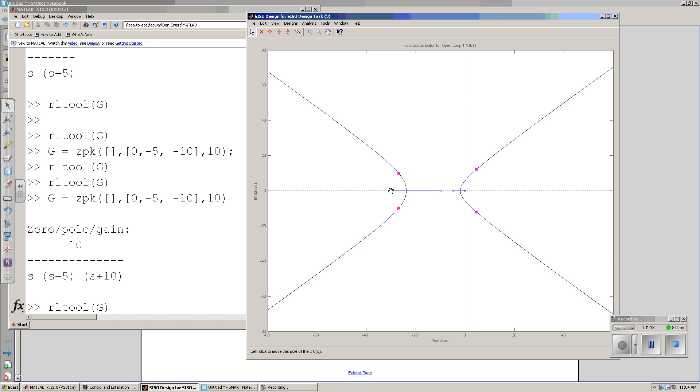If I take that pole and move it around, as it goes way far left, it's not having much effect on the root-locus on the right. As I bring that pole to the right, it's pushing the root-locus plot away. It's repelling. That's what poles do.